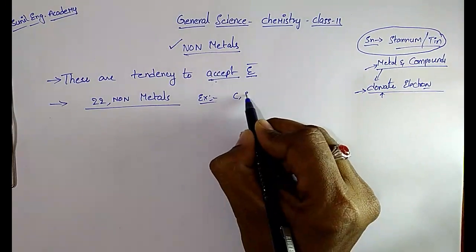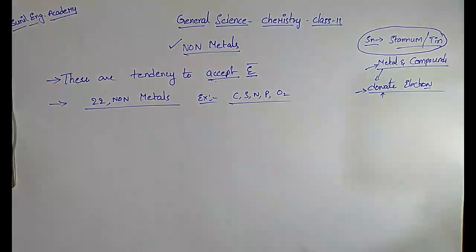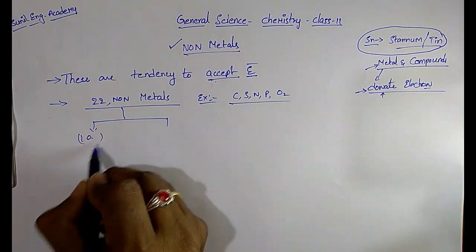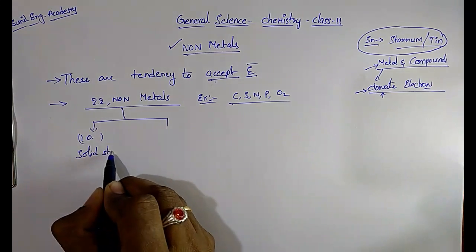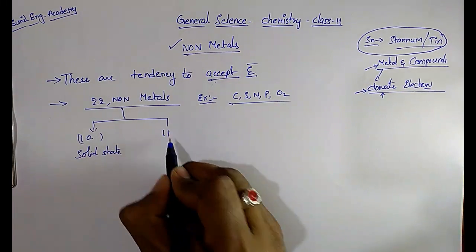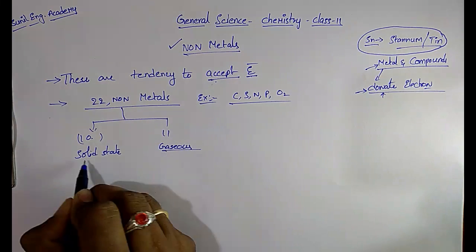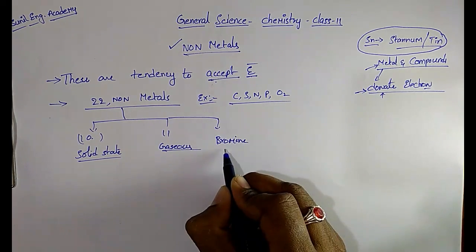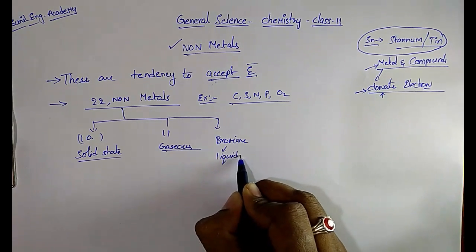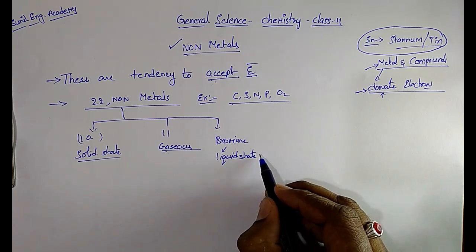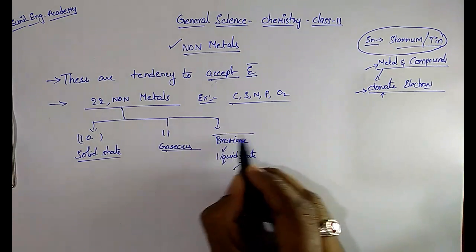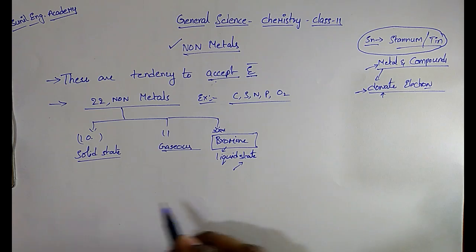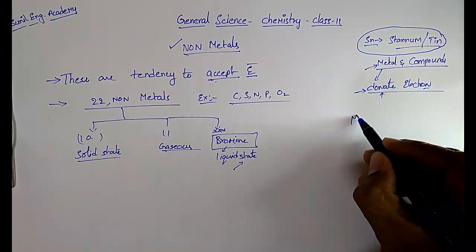Examples of non-metals are carbon, sulfur, nitrogen, phosphorus, and oxygen. Of these 22 non-metals, 10 are in solid state, 11 are in gaseous state, and the remaining one is bromine, which is in liquid state. So the non-metal which is in liquid state is bromine.